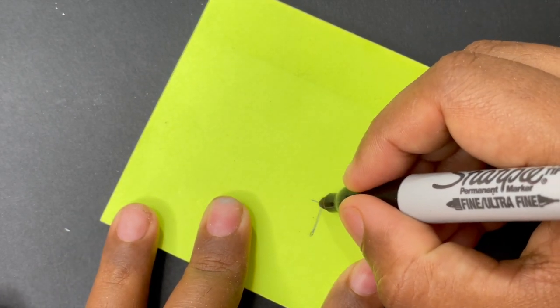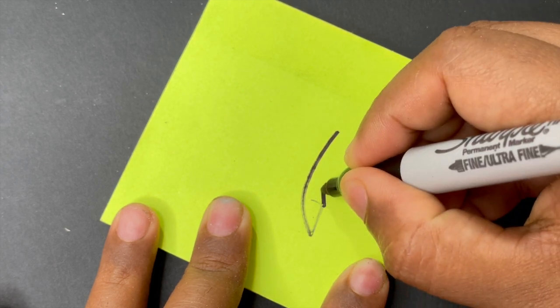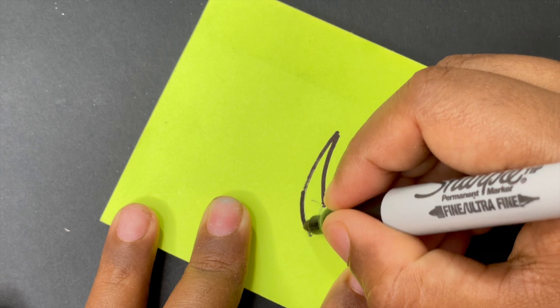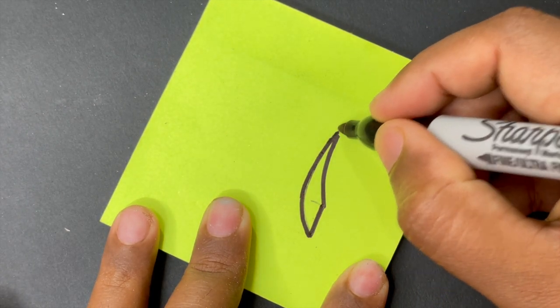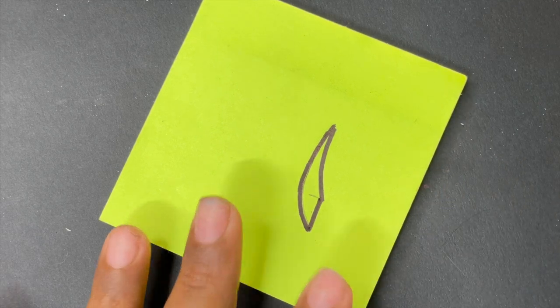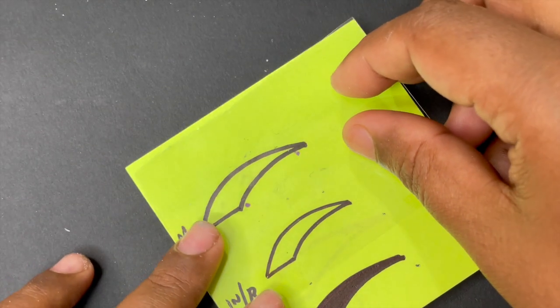Here I'm using a Sharpie marker and I'm creating an apex and overall claw-like shape. As you can see, I drew it and I repeated the same for all the fingers, and I also marked which one is for which finger so that we don't get confused.